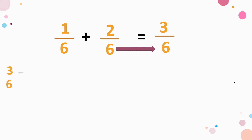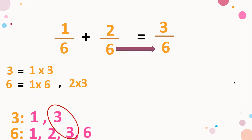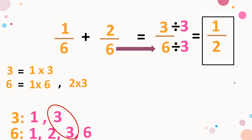Three equals three times one, so the factors of three are one and three. For six, we have one times six and two times three. So the factors of six are one, two, three, and six. The greatest common factor here is three. So divide both numerator and denominator by three: three divided by three is equal to one, and six divided by three is equal to two. So one-half is the final answer.